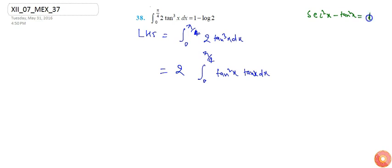I can write tan square x to be sec square x minus 1. So 2 integration 0 to π by 4, sec square x minus 1 tan x dx.